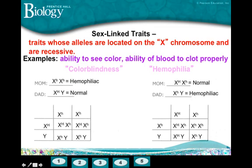More often than not, boys that inherit a recessive sex-linked trait are going to get it from their mother. Why would that be? Boys always get their X chromosome from mom. If girls get it, they have to partially get it from their dad, but also from their mom. So how can a mom be normal but still have the recessive allele? That's where this situation occurs — we call that mom a carrier.